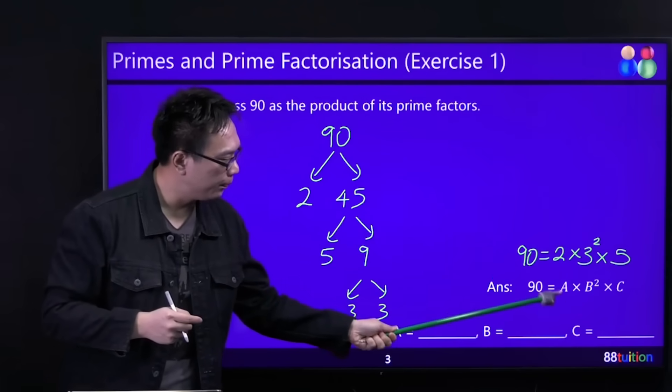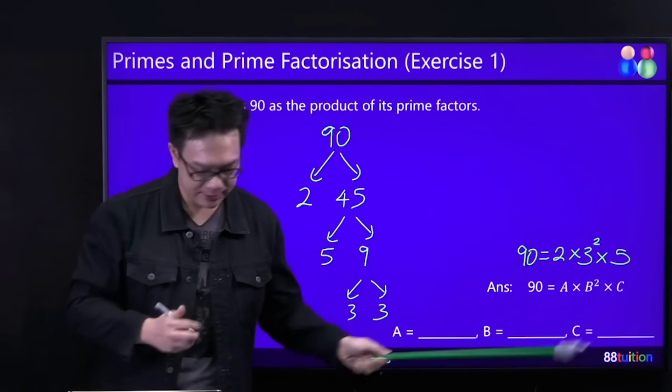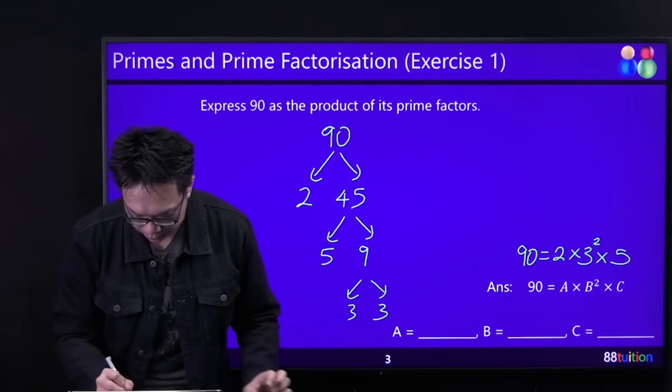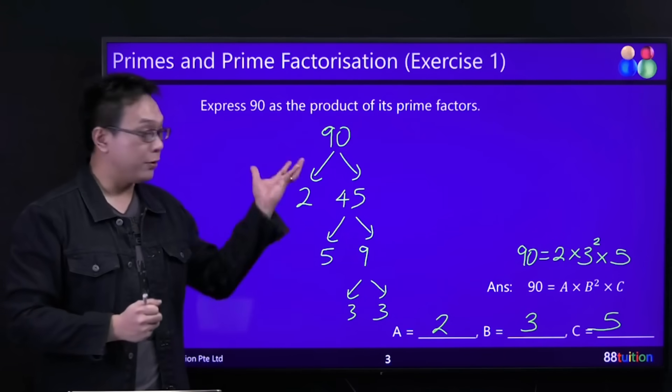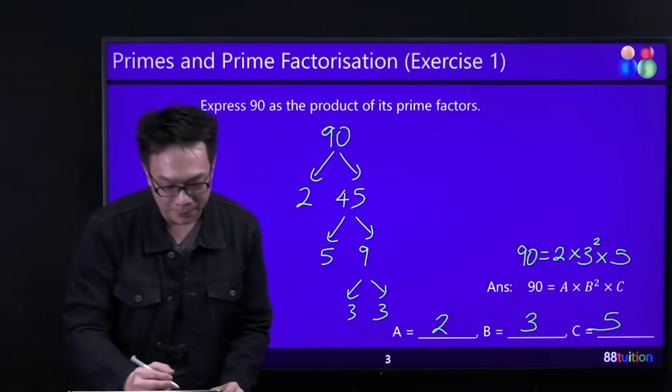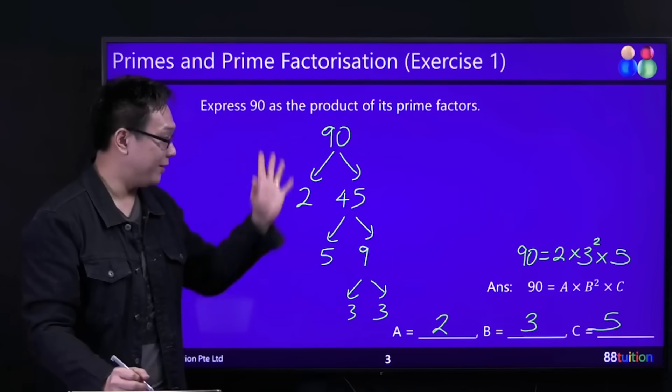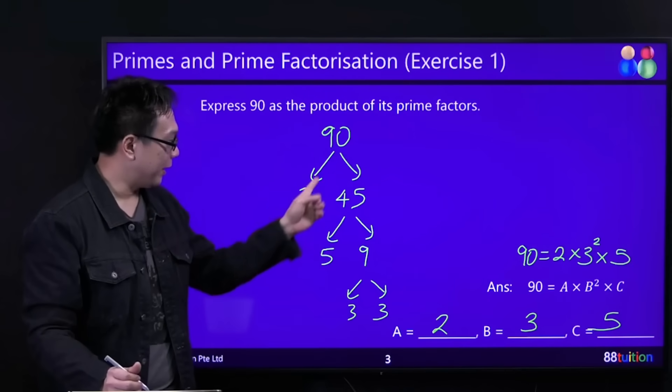Then now you compare: A is your 2, B is your 3, C is your 5. So A is your 2, B is your 3, and C equals 5. Is that okay? Can use this? Sure, no problem. But my advice to you: at the end of the day, for this, try to circle them.